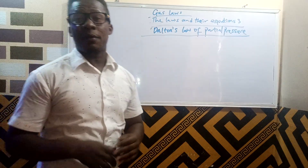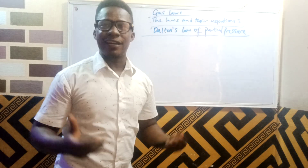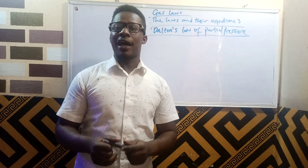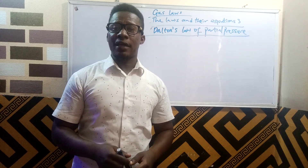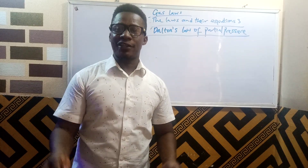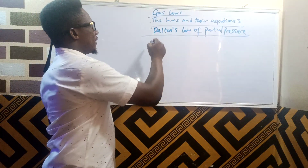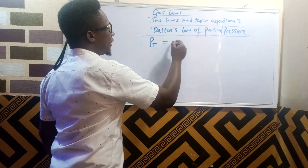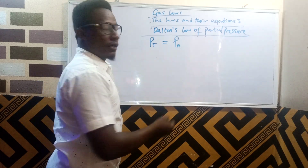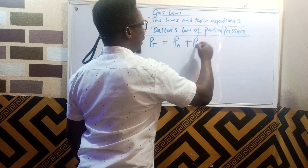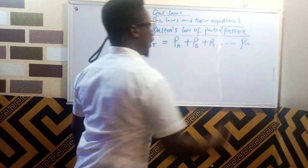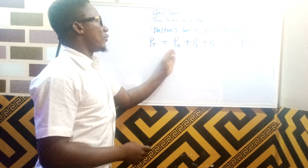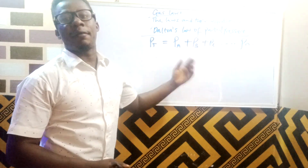Dalton's law of partial pressure says that in a mixture of gases that do not chemically combine together, the total pressure of the gas is the sum of the partial pressures. That means the total pressure Pt is equal to the partial pressure of gas A plus the partial pressure of gas B plus the partial pressure of gas C, and so on. The total pressure of the gas is the sum of the partial pressures of individual gases present.